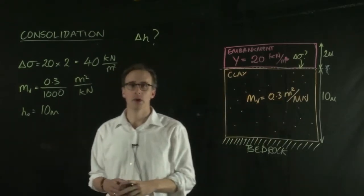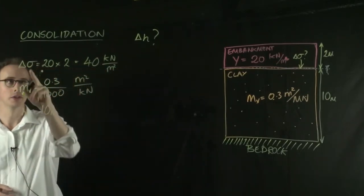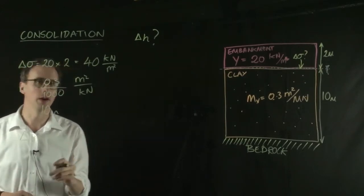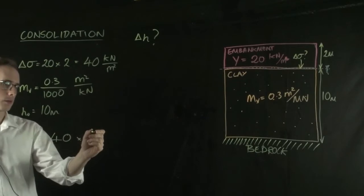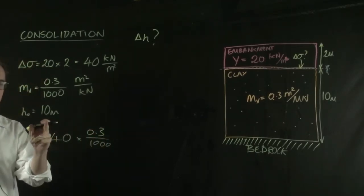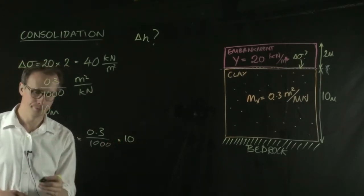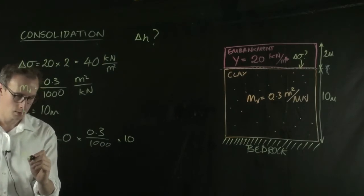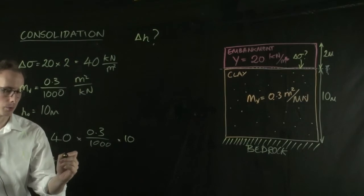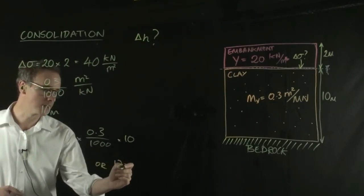We put that into our formula of delta H. Delta H equals the change in stress, which is 40, multiplied by the MV value, 0.3 over 1000, multiplied by 10 meters, our initial sample thickness. So delta H in this example equals 0.12 meters or 12 centimeters.